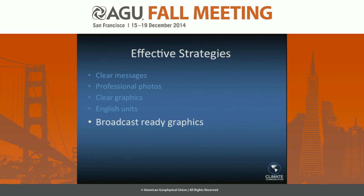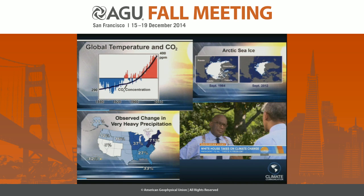Another important thing to remember is that most people — much as we would like to believe the National Climate Assessment is on everybody's coffee table — will only see of this report what they see in the media. So it's really important to make broadcast-ready graphics available. While we were at the White House releasing the report at a press conference, President Obama was in the Rose Garden talking to broadcast meteorologists from around the country. Here you see him on the Today Show talking with America's weatherman, Al Roker, and our broadcast-ready graphics are interspersed throughout these interviews. If you don't give the media these things, they don't have them — they try to do them themselves and it doesn't work out so well.